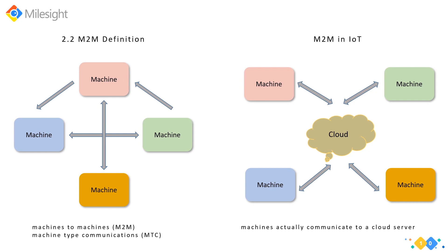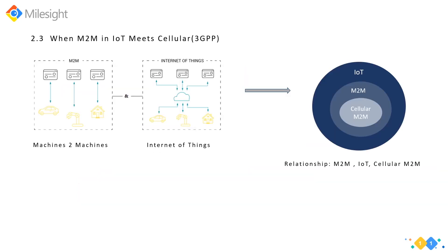In the early days, when the concept of the Internet of Things was emerging, the two concepts — IoT and M2M — were even interchangeable in many scenarios and applications.